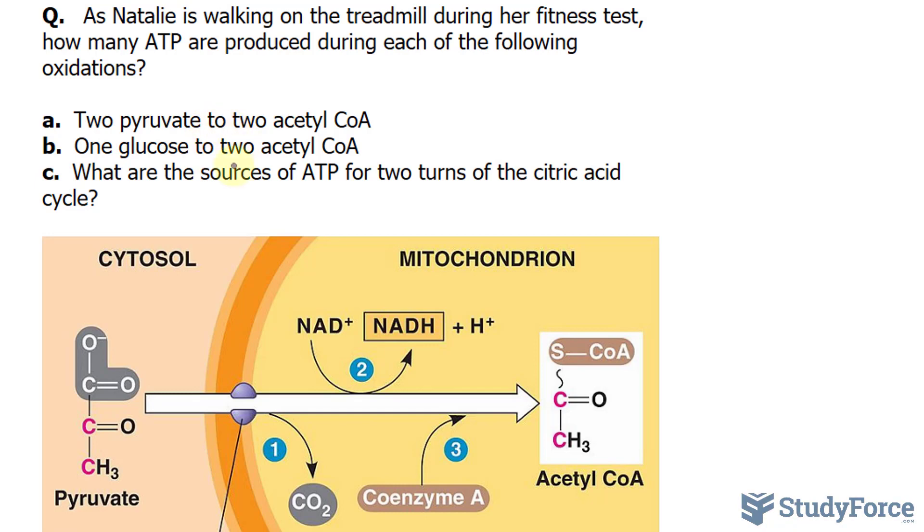So if two pyruvate molecules form two acetyl-CoA molecules, we can multiply 2.5 by the two pyruvate molecules. And that means five ATPs will be formed in this process.